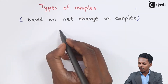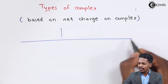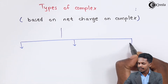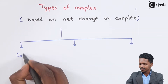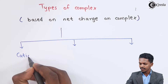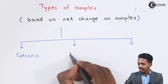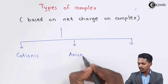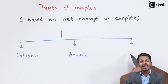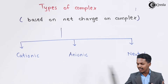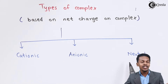There are three types of complexes based on net charge: the first one is cationic complex, the next one is anionic complex, and the last one is neutral complex.